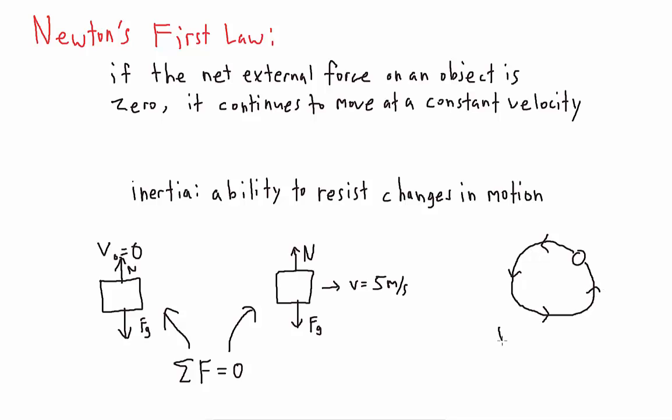Next, we have a ball moving in a circle at a constant speed of five meters per second. However, even though it's moving at a constant speed, it's not moving in a straight line. To move in a circle, the velocity has to constantly be changing direction. So if the velocity is changing, it has some acceleration, which means the net external force on it cannot be equal to zero. If the net external force were zero, it would be moving in a straight line.